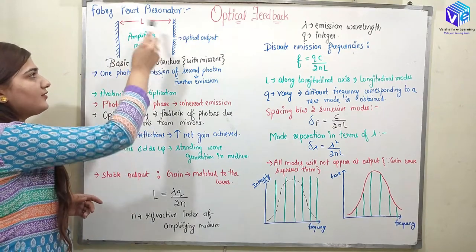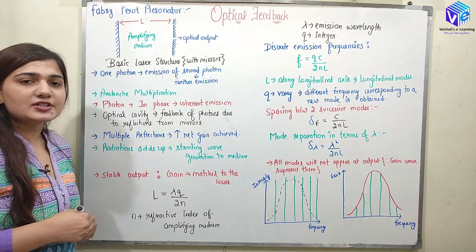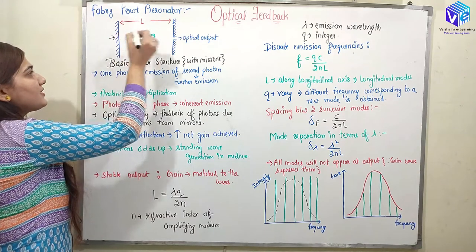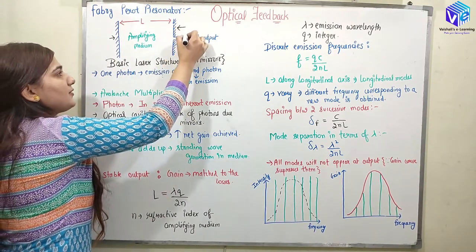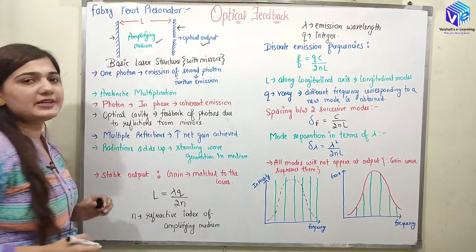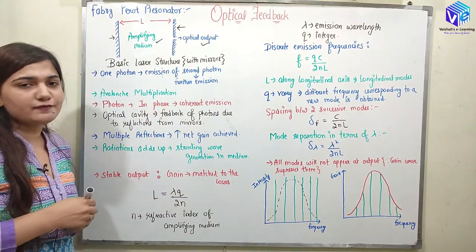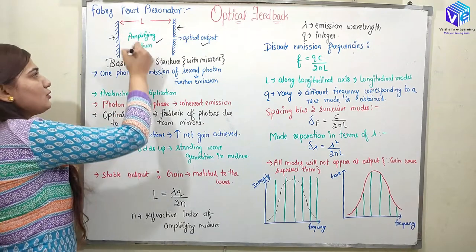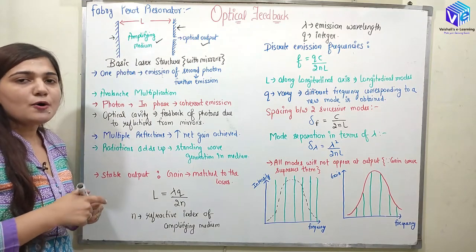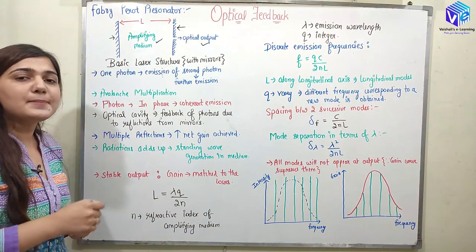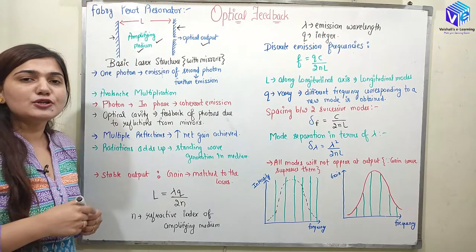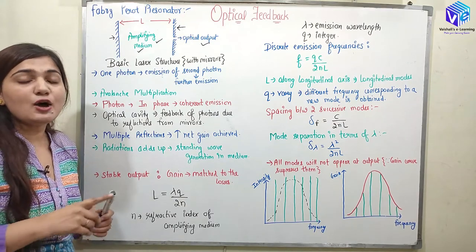Here you can see the basic laser structure. It is formed with the help of an amplifying medium and two mirrors. The first mirror is on one side, the second mirror is on the other side, and from the second mirror we are going to generate the optical output. In between the two mirrors we have the amplifying medium. In a laser structure, we have the optical cavity placed between the two mirrors, and when a photon is supplied, the amplifying action happens in the optical cavity, leading to avalanche multiplication.